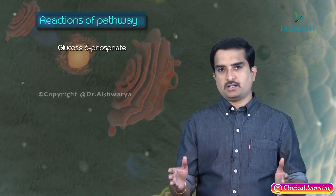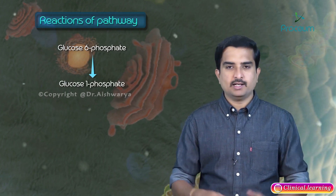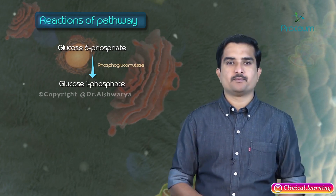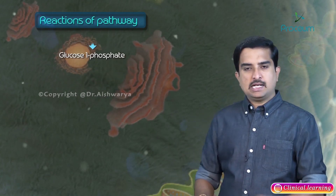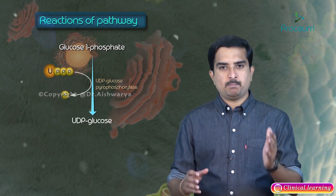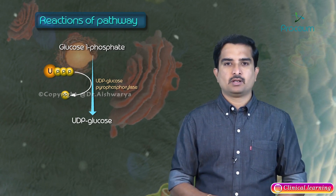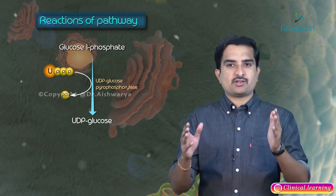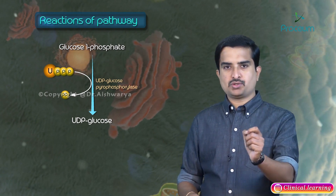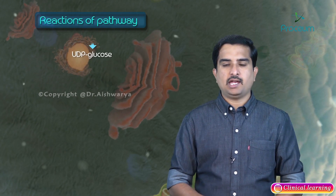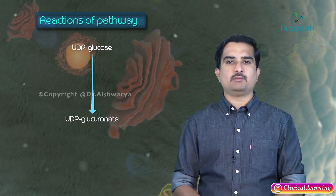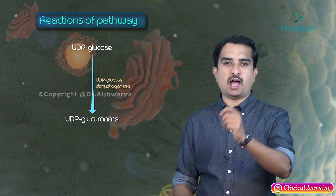Glucose 6-phosphate is converted to glucose 1-phosphate in the presence of the enzyme phosphoglucomutase, and glucose 1-phosphate leads to the synthesis of UDP-glucose by the enzyme UDP-pyrophosphorylase. The reactions up to this point are the same as in glycogenesis. The UDP-glucose is then oxidized to UDP-glucuronate in the presence of the enzyme UDP-glucose dehydrogenase.